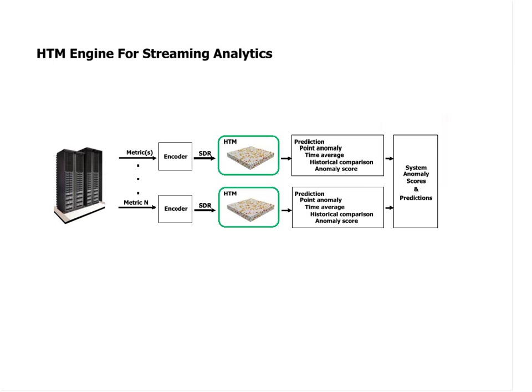We've released something called the HTM Engine, which makes it extremely easy to instantiate and run a large number of HTM models. Each model is attached to a stream, such as a metric value changing over time. The data is encoded into a sparse distributed representation — an SDR — which is the common data structure used in cortex. The SDR is fed to our algorithms, and a stream of predictions and anomaly scores are published in the database. With the HTM Engine, you can instantiate thousands of models on a single server, running all these models in parallel.